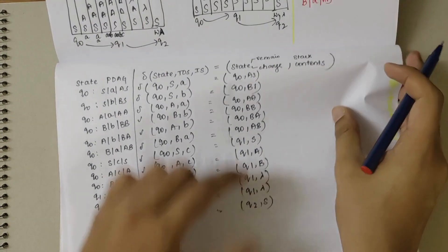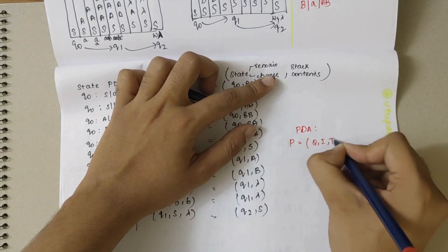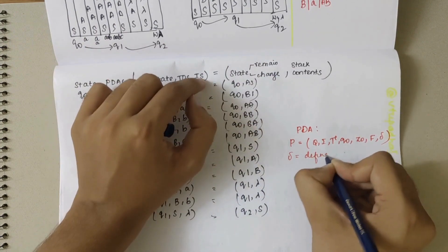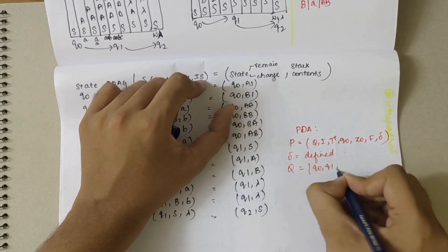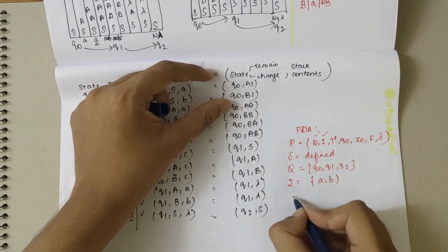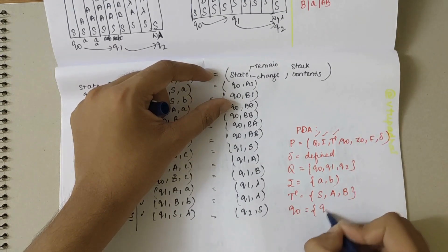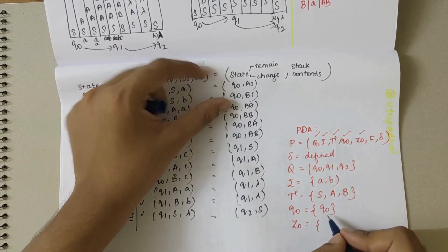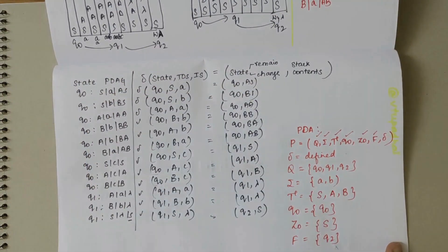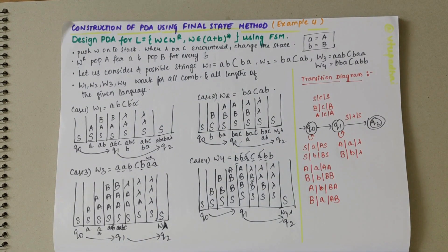Now we define the PDA formally: P = (Q, Σ, Γ, δ, Q0, Z0, F). Q = {Q0, Q1, Q2}; Σ = {a, b}; Γ = {S, A, B}; the initial state is Q0; the initial stack symbol Z0 = S; the accepting state F = {Q2}; and the transition function δ is as defined above. This is how we construct a PDA using the final state method.